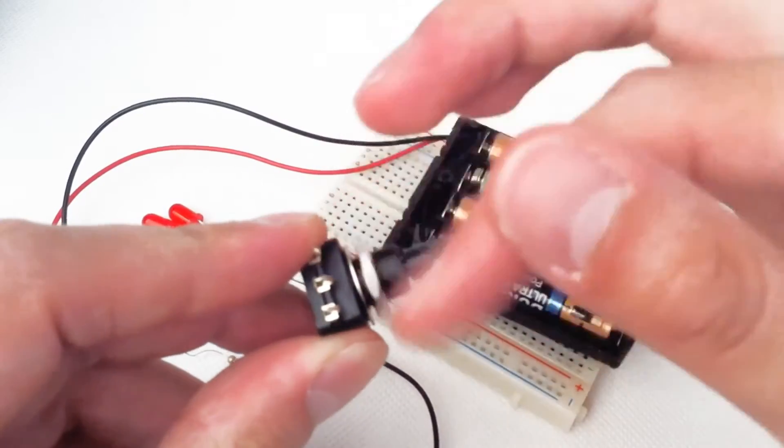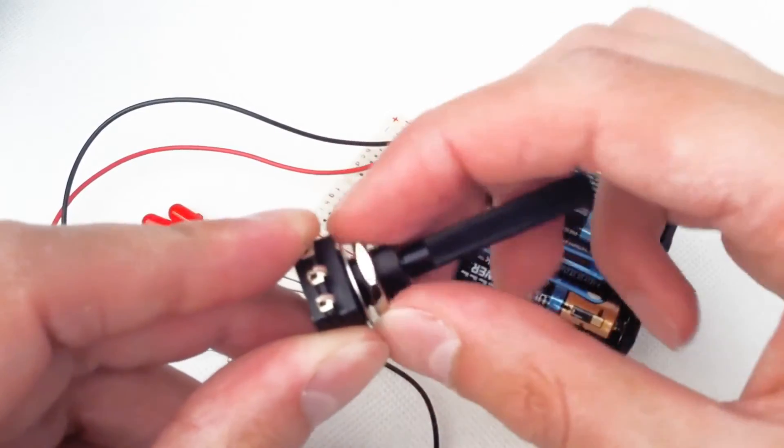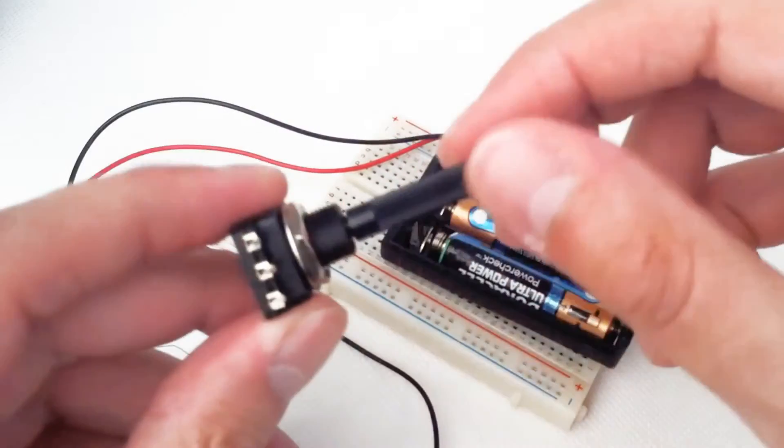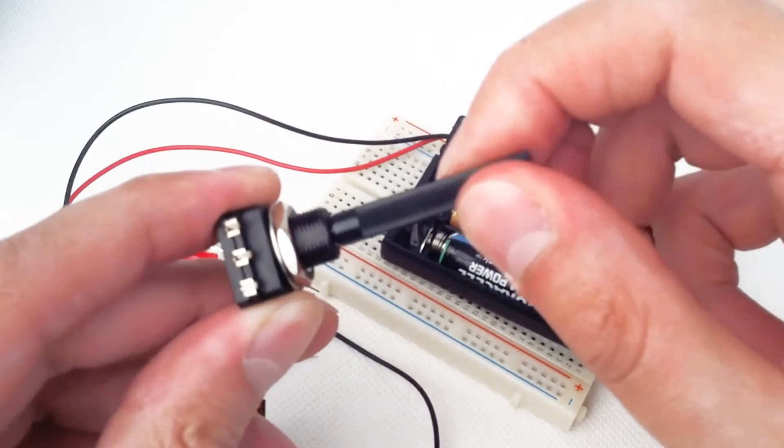It comes with these nuts in the pack. You literally just slide them on and screw them on like so. You can see it has 3 terminals and we vary the resistance by turning the dial like this.